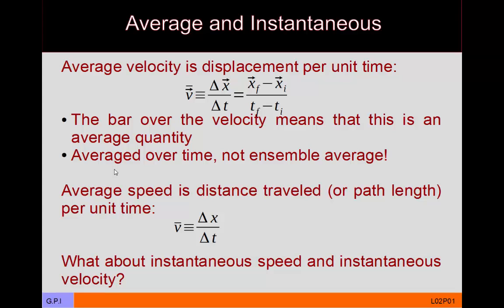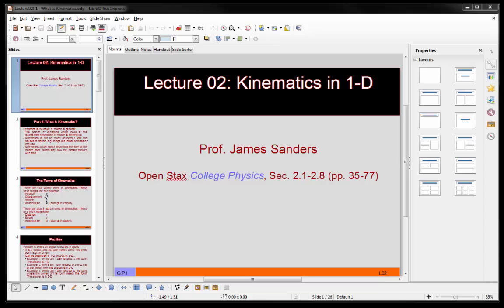Let's make this concrete with a speed example. You are running from one end of a track to another — a 100-meter distance. You run the first half (50 meters) at 5 meters per second, then slow to a walk and do the second half at 1 meter per second. What is your average speed? It's not going to be (5 + 1) / 2. Rather, you have to figure out how much time that 100 meters took.